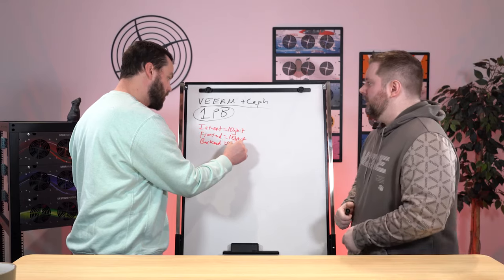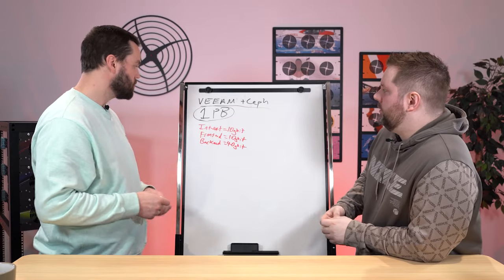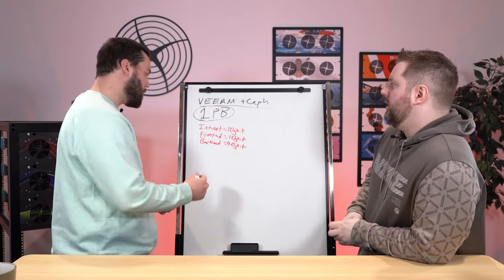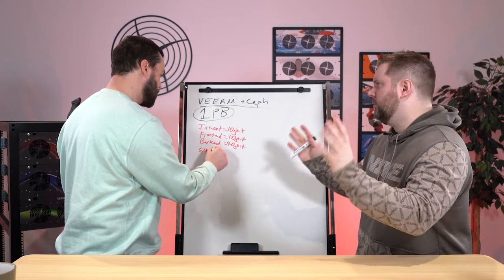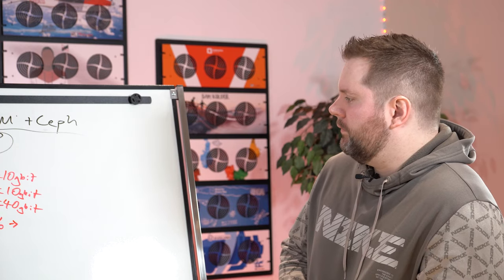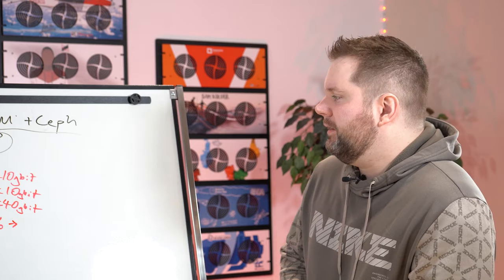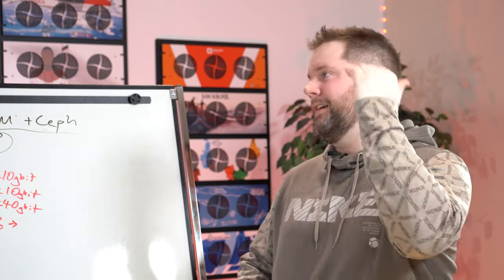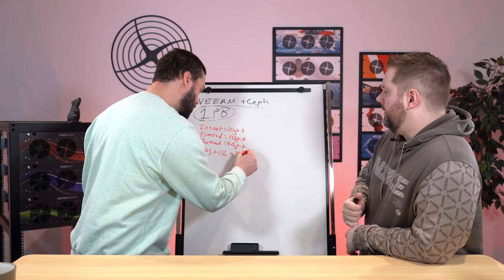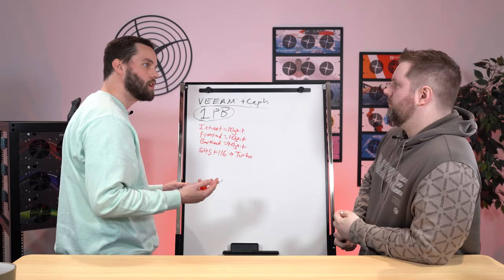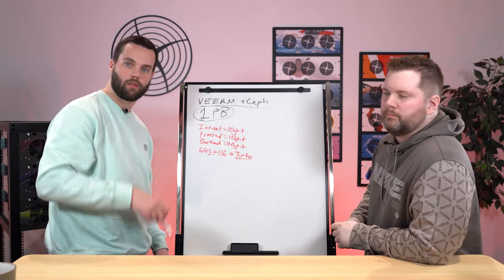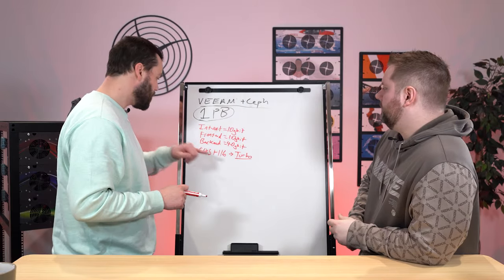With one petabyte of storage in mind, I think a great way to go is our S45 nodes using Hybrid 16s. Four of those would fit that plus quite a bit extra. For the electronics package, I'd spec this at our turbo spec level — our big Gold 26-core Intel CPU and 256 gigs of RAM at least. Our turbo model — if anyone's interested, go to 45drives.com and check it out.